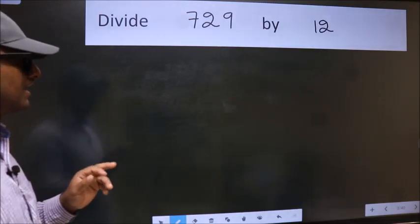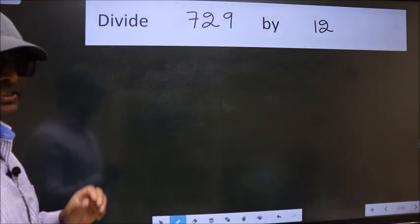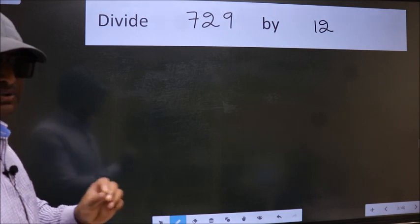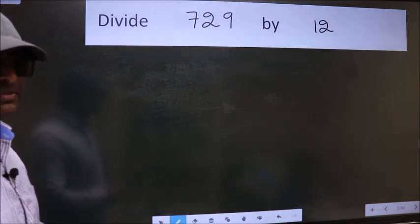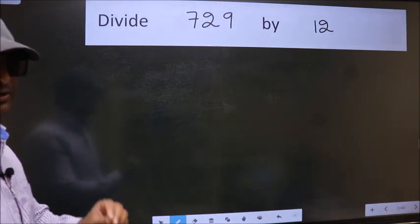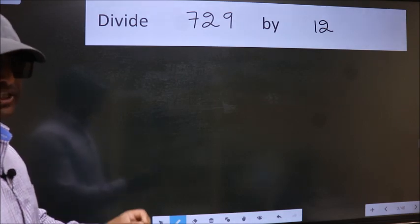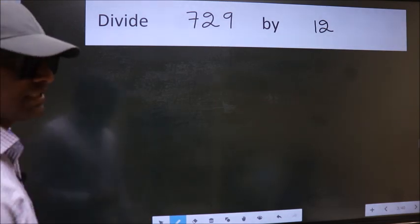Divide 729 by 12. While doing this division, many do this mistake. What is the mistake that they do? I will let you know. But before that, we should frame it in this way.